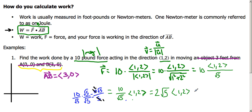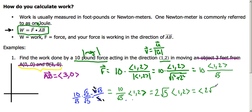So 2 root 5 times 1 is 2 root 5, and 2 root 5 times 2 is 4 root 5. So our force vector is (2√5, 4√5).